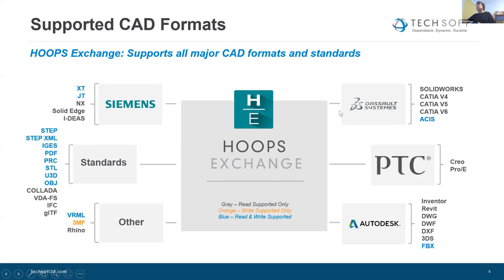The formats XT and ACIS represent the kernel modelers behind several CAD systems. There is one exception — 3MF, shown in orange — we support only for export. As a company we've been tracking 3D printing and additive manufacturing for some years, and we supported 3MF export because we anticipated it becoming more established. In my experience so far it's not really established itself as a standard, but we continue to support it for export purposes.